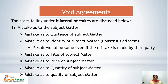Bilateral mistakes can be regarding mistakes as to subject matter. First is mistake as to existence of subject matter — when any party is unclear about whether the subject matter exists at the time of contract. For example, Mr. A offers his horse to B for sale, and Mr. B accepts to purchase it for Rs. 1000. But both never knew the horse was dead at that time. The existence of the subject matter was not there, making this a mistake as to existence of subject matter — hence a void contract.